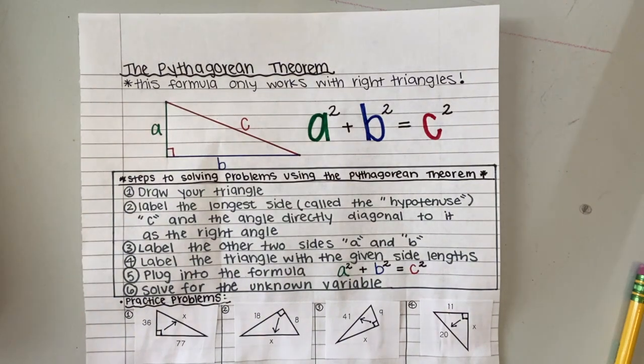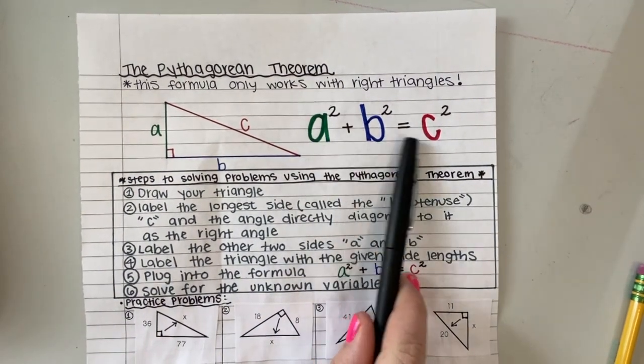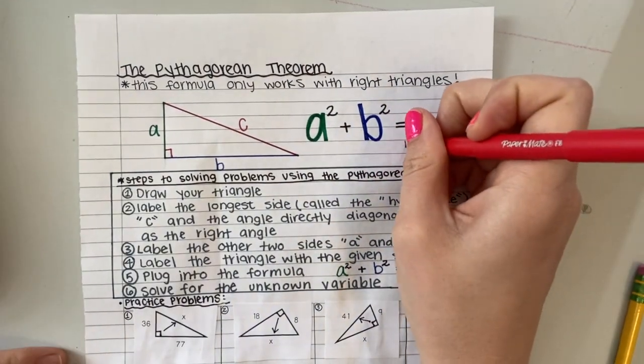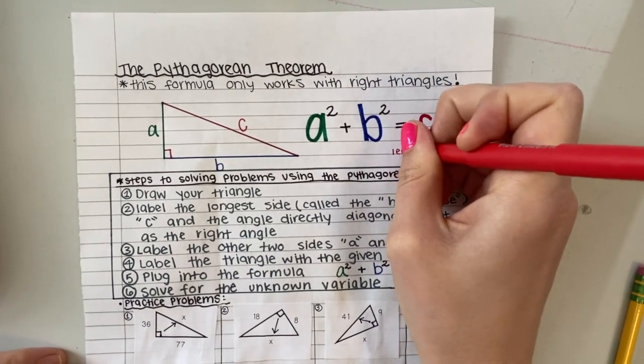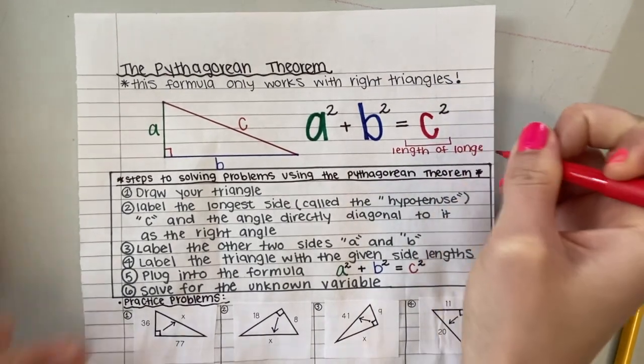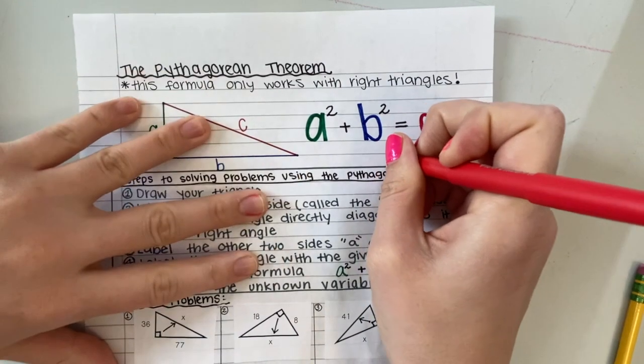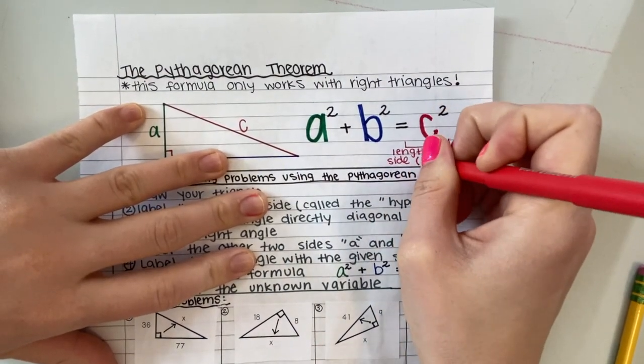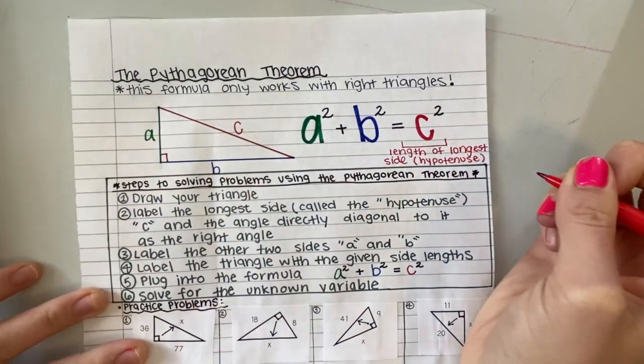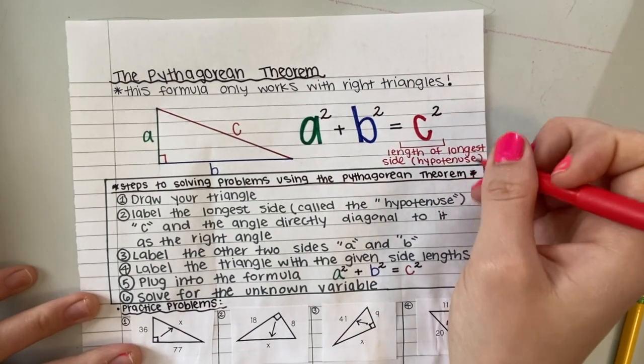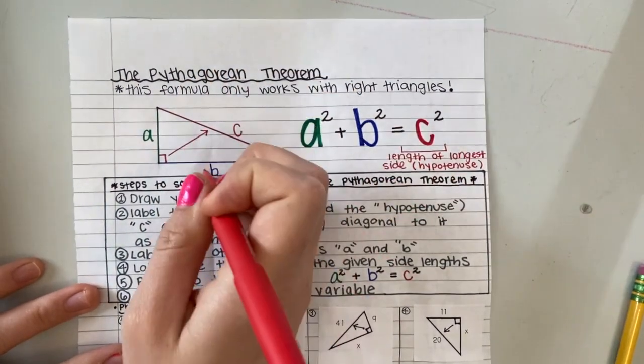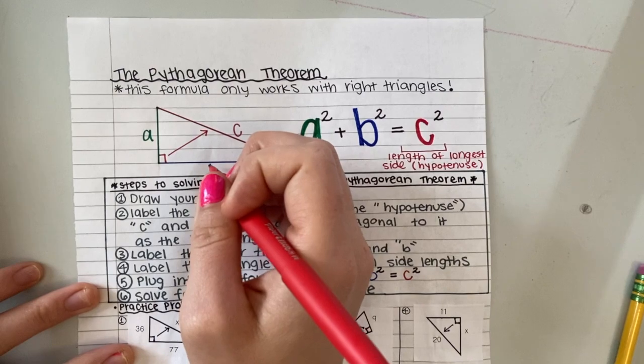So this formula looks like this: A squared plus B squared equals C squared, where C is the length of the longest side, and another word for our longest side of our right triangle is the hypotenuse. We also know that this longest side is always directly diagonal, so it's neither of the sides touching the right angle, but it's the one that's across from the right angle.